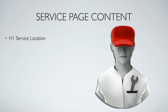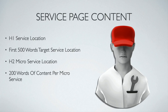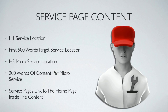For your service pages, the H1 is going to be your service plus location — 'boiler repair London,' 'boiler installation London,' 'underfloor heating London.' The first 500 words target that service location. Then you create H2s for the micro services — the smaller services that exist inside the bigger service, like a monthly subscription or a specific install type. You write 200 words of content per micro service. Service pages link to the home page inside the content.